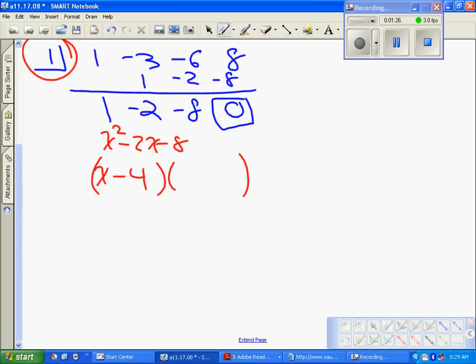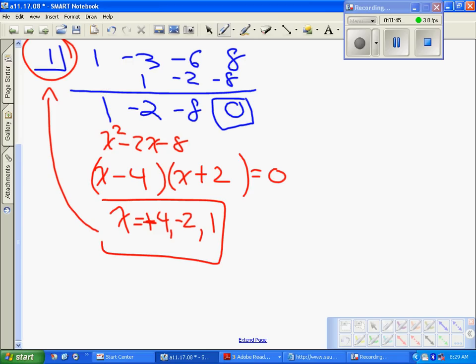x - 4 times x + 2. Okay, therefore, since this equals zero, x equals 4 and -2. Positive 4, negative 2, and 1. Don't forget the 1 from up here. And we have found all our real zeros.